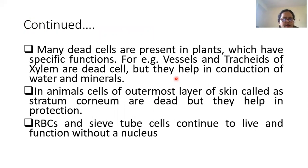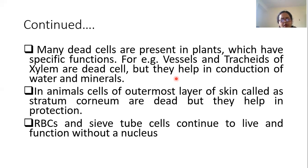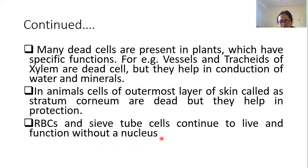Many dead cells in plants have specific functions — for example, vessels and tracheids of xylem are dead cells but they help in conduction of water and minerals. So how can dead cells perform functions? In animal cells, the outermost layer of skin called the stratum corneum is dead, but it helps in protection — cell theory could not explain this. Also, RBCs and sieve tube cells continue to live and function without a nucleus, yet they perform their functions.